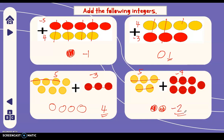That's how you add integers using colored chips. If the chips are the same color, add all of them. But if they're different, cancel out all the zero pairs. Zero pairs means one positive and one negative cancel each other out.